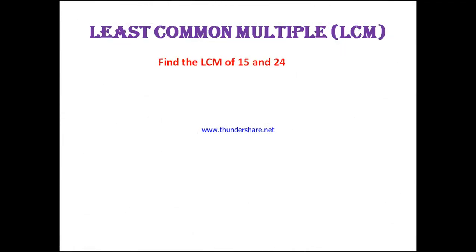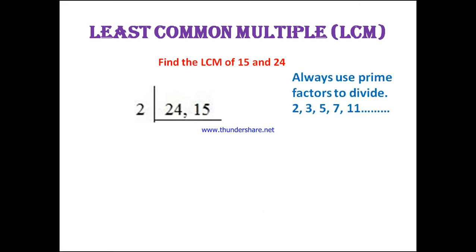Hello students, in this video let's learn about least common multiple or lowest common multiple by short division method. Find the LCM of 15 and 24. Let's take the given numbers in a single row: 24, 15. To find the LCM we always use prime factors only. The first prime factors are 2, 3, 5, 7, and 11.